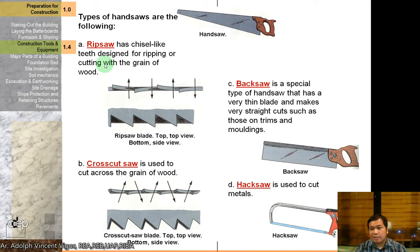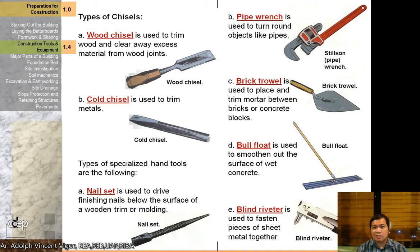There are different types of hand saws: the rip saw has teeth designed for ripping or cutting with the grain of wood; the cross-cut saw is used to cut across the grain of wood; the back saw has a very thin blade used for trims and moldings; and the hacksaw is used to cut metals. For chisels: a wood chisel is used to trim wood and clear away excess material from wood joints, while a cold chisel is used to trim metals.